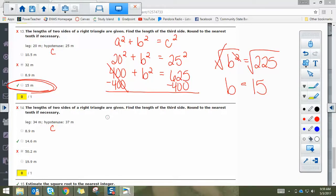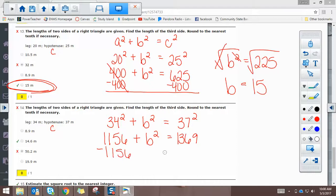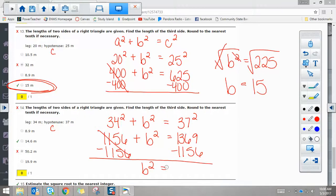Similarly, on number 14, they gave us a leg of 34, so I'm going to put that in for a, plus, I don't know the other leg, or the b squared, equals 37 squared. So 34 squared, I'm using a calculator, is 1156. I still don't know the b squared. 37 squared is 1369. So I'm going to subtract 1156 from both sides. And we get b squared equals 1369 minus 1156. It's 213.